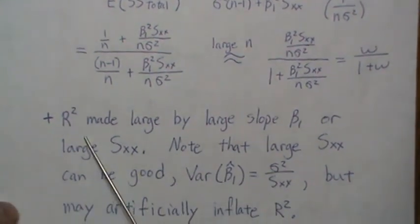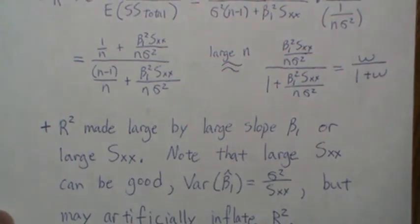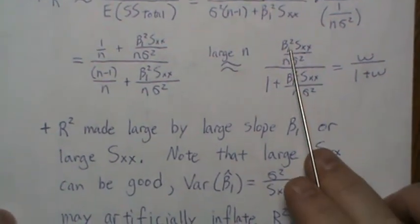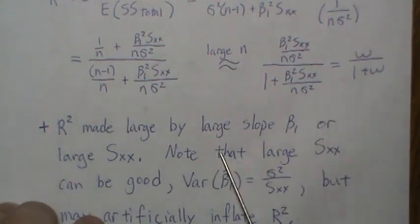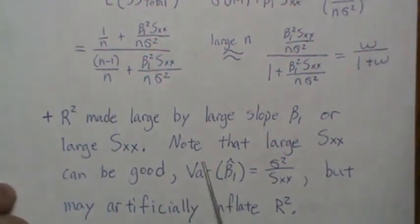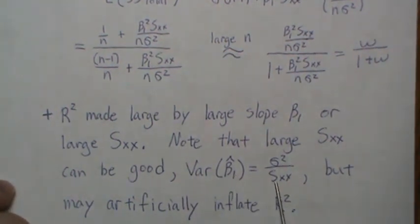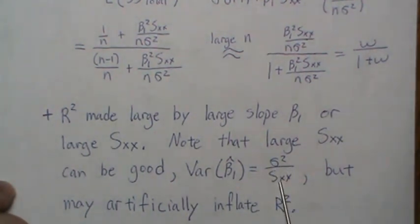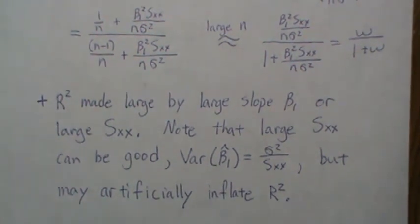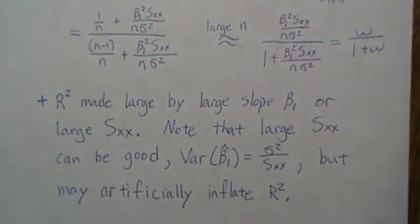A few notes of caution: R² may be made artificially large by a large slope or a large Sxx — meaning you've spread your data out widely. Note that a large Sxx is generally good because it reduces the variance of the slope estimate, making tests and confidence intervals more powerful and tighter. However, it may also artificially inflate R², so R² may not be a fully reliable measure of overall model usefulness.